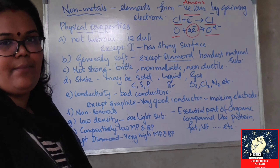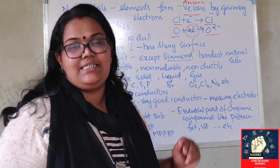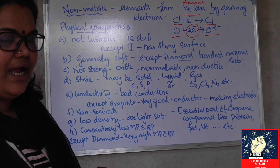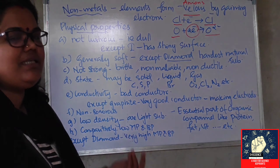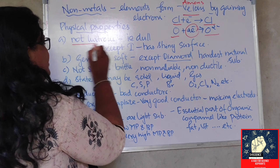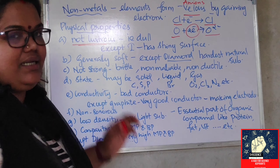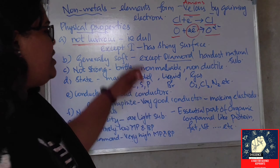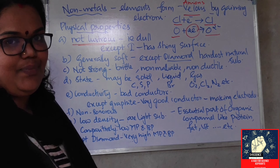We will do a comparative study so that you will understand all things properly. Metals are lustrous in nature — that means they have a shiny surface. What about nonmetals? Nonmetals do not have a shiny surface; they are dull — not lustrous. But there is an exception: the nonmetal iodine, which has a shiny surface.